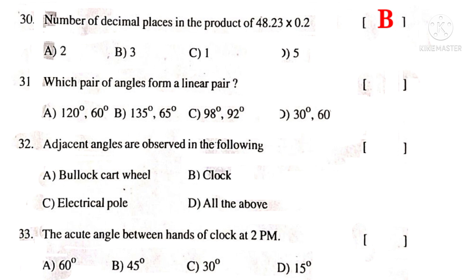Which pair of angles form a linear pair? Observe the word line. It indicates 180 degrees angle. So, sum of 120 degrees and 60 degrees gives 180 degrees. So, the correct choice is A.